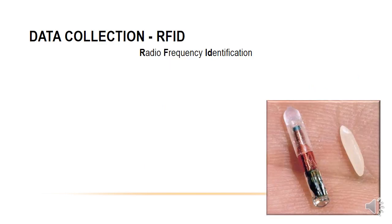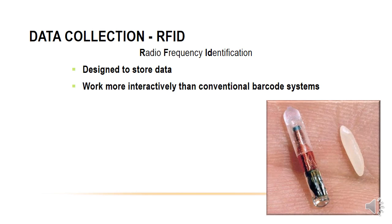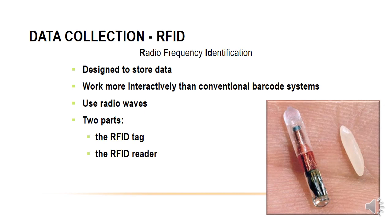RFID tags are designed to store a little bit of data. They're more interactive than a conventional barcode system, because a barcode just stores whatever's in the barcode, whereas an RFID tag can store far more data. They use radio waves to communicate with the reader. There are two parts to the system: the RFID tag and the RFID reader.